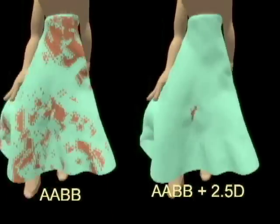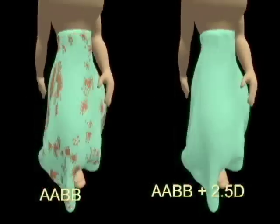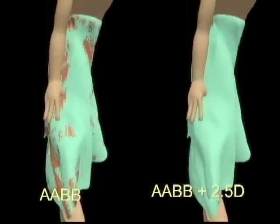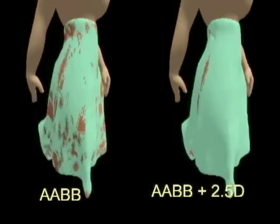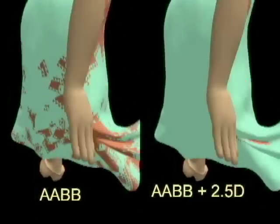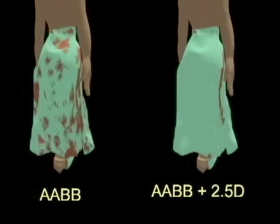In this split screen video, we highlight the benefits of 2.5D overlap tests. On the left, we show the PCS in orange obtained using an AABB hierarchy. On the right, we highlight the PCS in orange after performing 2.5D overlap tests.